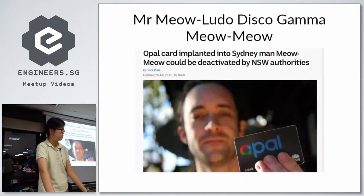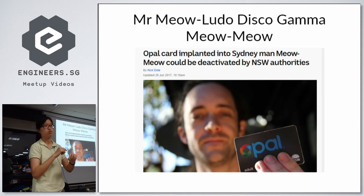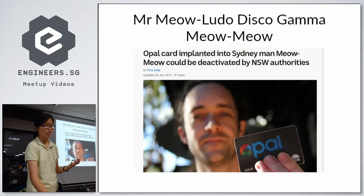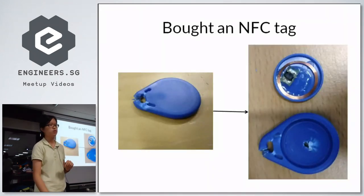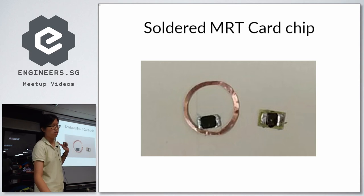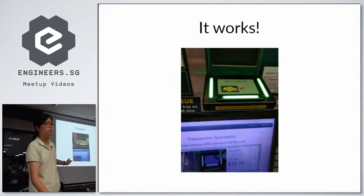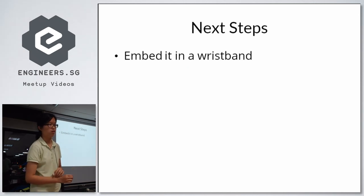I wanted to replace the antenna, so I went to three different online calculators and got three different inductance values, so I decided that wasn't going to work. Then someone sent me an article about a person called Meow Ludo Disco Gamma Meow Meow — that's his real name, and he's running for a political position in Australia right now. He actually implanted his MRT card chip into his skin, but then he got caught and got into quite a bit of trouble. I checked the EZLink card terms and they said they would at most blacklist my card, which I can live with. So I decided the best place to get a small antenna was to buy an NFC tag, drill a hole, pry it apart, dissolve the glue with acetone, and solder the MRT card chip onto it. I only finished this yesterday. I tested it yesterday and early this morning — and yes, it works. I can top up my card, I can tap into some MRT stations but not all, and it works sometimes on buses. In future, I may embed it into a wristband or some other form factor that lets me carry it easily.